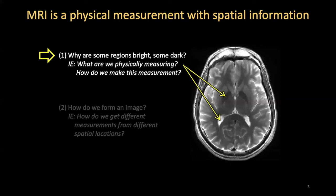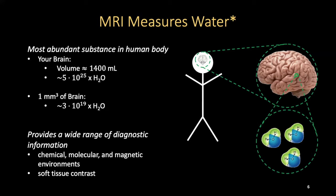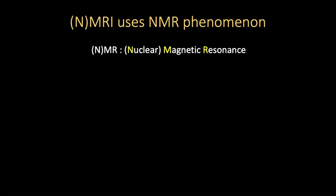First, what exactly are we measuring with MRI? Primarily, by far, most MRI studies are measuring water throughout the body. Water is the most abundant substance — our brain consists of nearly 1.4 liters of water. In a millimeter cube of water we have a very large amount of water, and a millimeter cube is roughly the size of an MRI voxel. In MRI we're very sensitive to the chemical, molecular, and magnetic environments of water, which vary quite a bit throughout the brain and different tissues, especially soft tissues, giving us this vast range of contrasts.